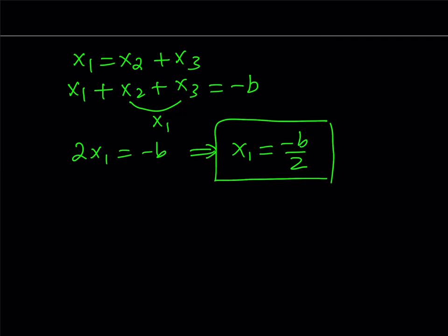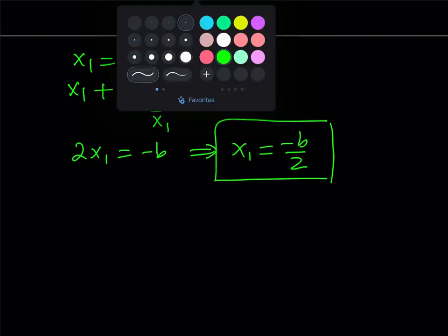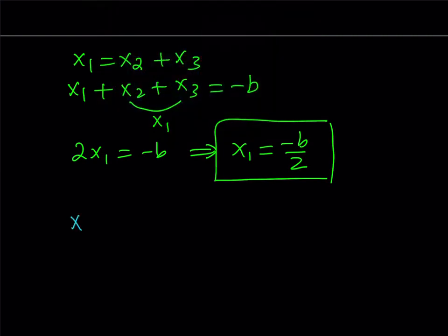Okay, great. So, now what do we have? We have the sum, we use the sum, so we got x1 from here. Let's go ahead and look at something else. What about the product? The product gave us x1x2x3, and that is supposed to equal negative d, right? Okay, great.